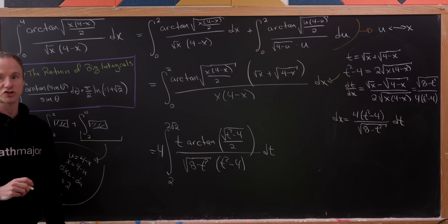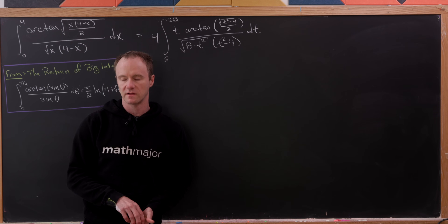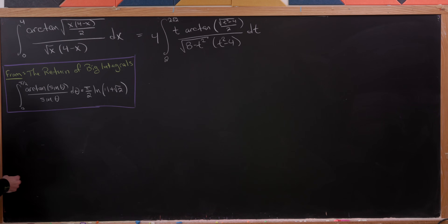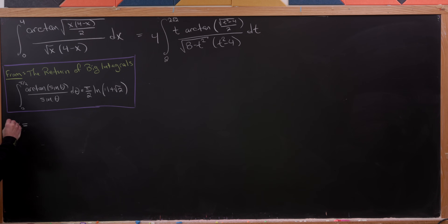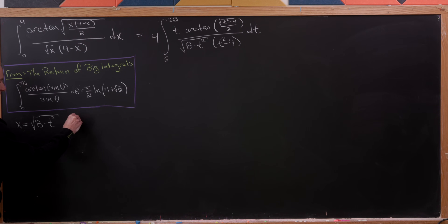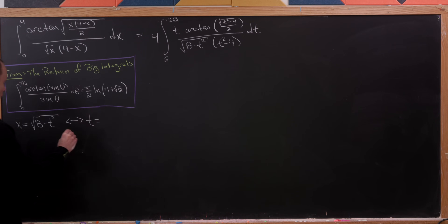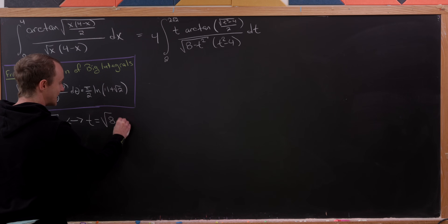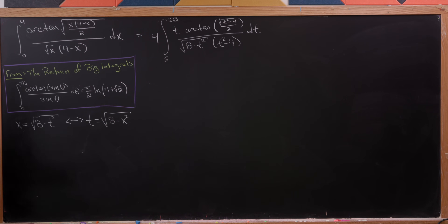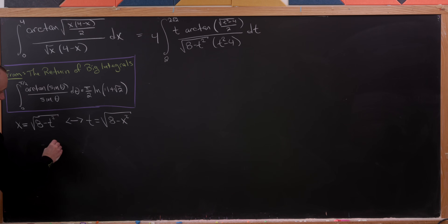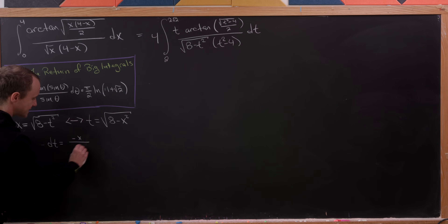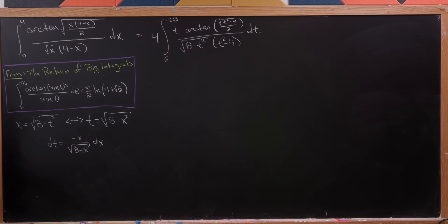Moving to the next board, we do another substitution: set x equal to √(8 − t²), equivalently t equals √(8 − x²). Then dt equals −x / √(8 − x²) dx. Also note that t² − 4 simplifies to 4 − x².